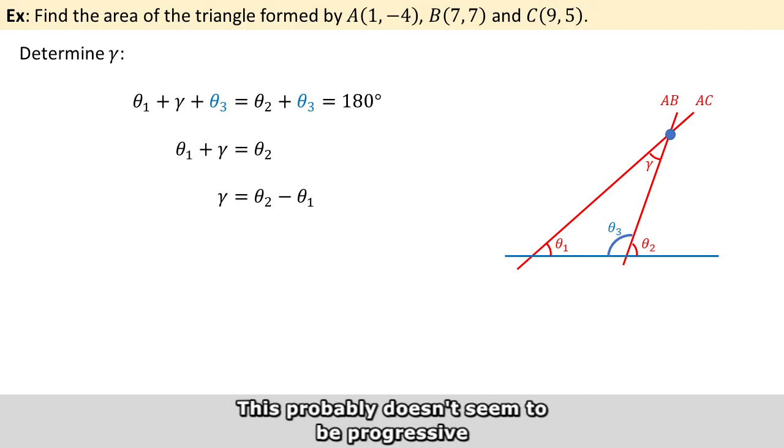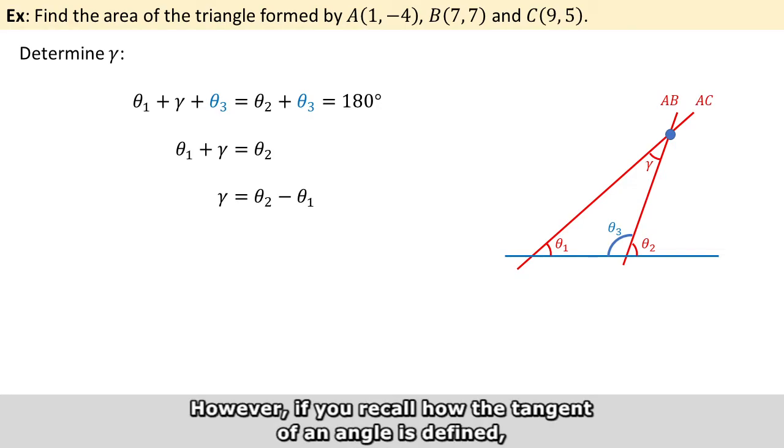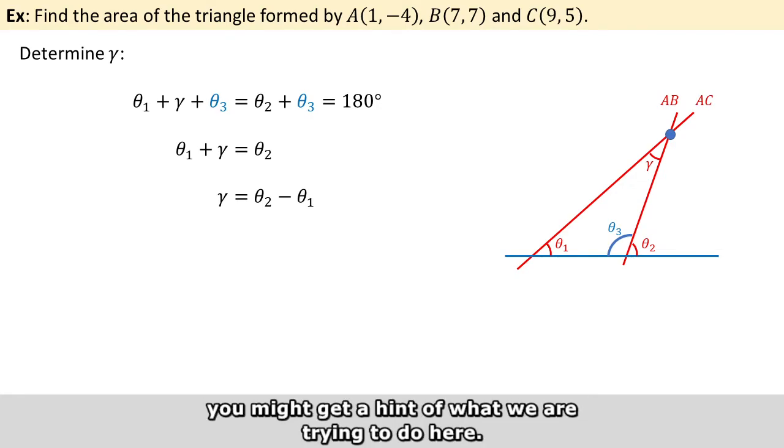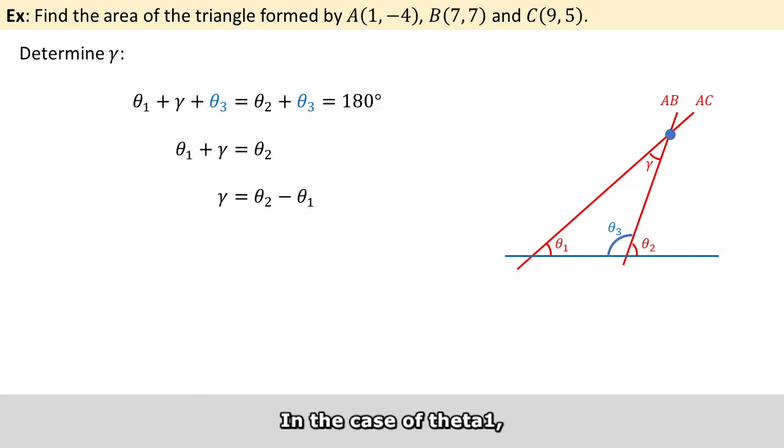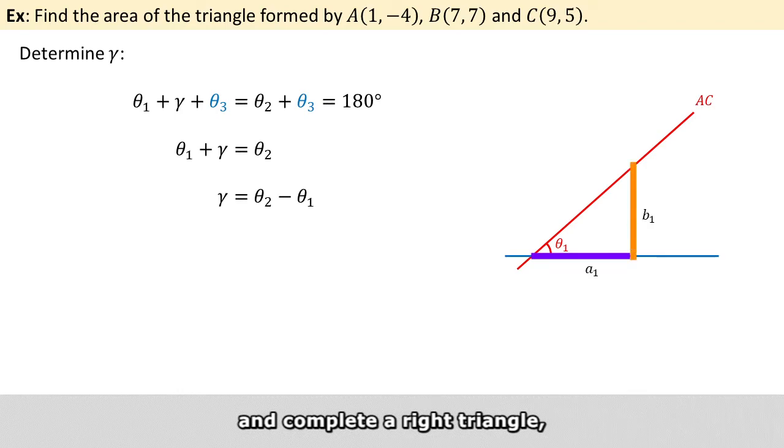This probably doesn't seem to be progressive because we do not know theta 1 or theta 2 either. However, if you recall how the tangent of an angle is defined, you might get a hint of what we are trying to do here. So in the case of theta 1, to get its tangent, we can find any point on the straight line and complete a right triangle, which means the tangent of theta 1 will be b1 over a1.